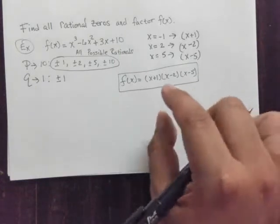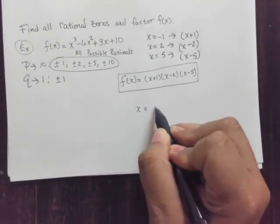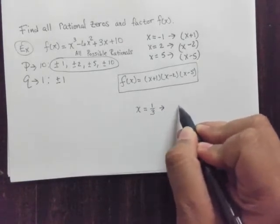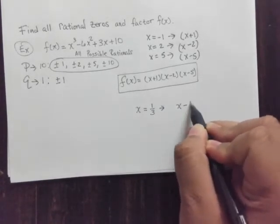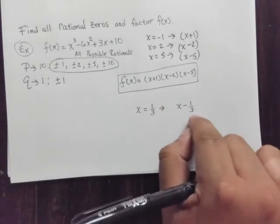I'm just going to add in a little bit of bonus material here. What if you had gotten x equals 1 third? Well, you might think about this and say, that's easy. It's x minus 1 third, which is a good start. But you have to clear the fraction.